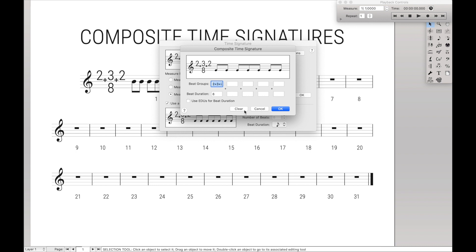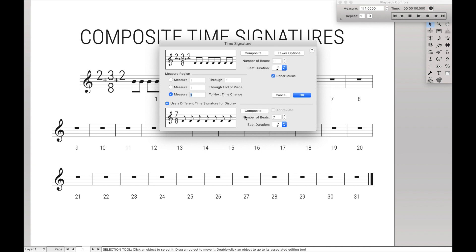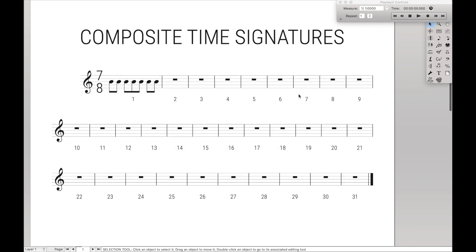So over here to composite, we're going to clear the composite time signature. We don't need it. And we're just going to increase the beats to 7 over 8. So as you can see, now it's displayed as 7 over 8, but it's beamed as 2 plus 3 plus 2.